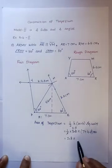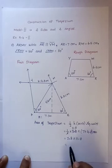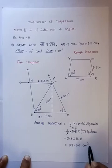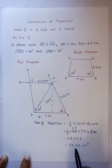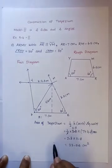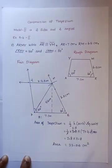7 plus 4.8 equals 11.8. If we multiply this, we get 33.04 cm. So the area of the trapezium is equal to 33.04 cm square.